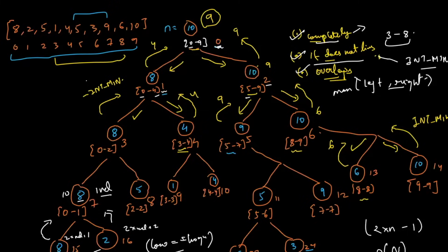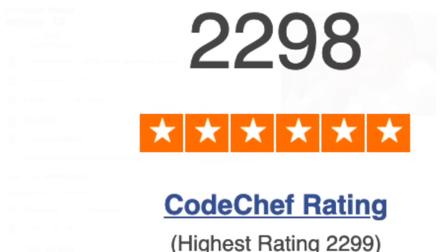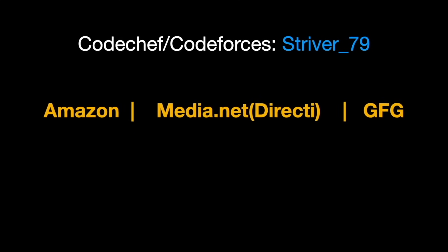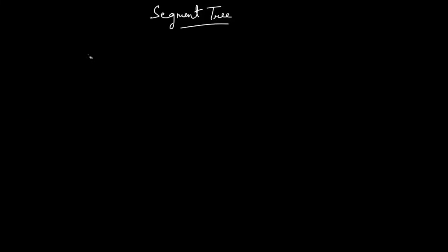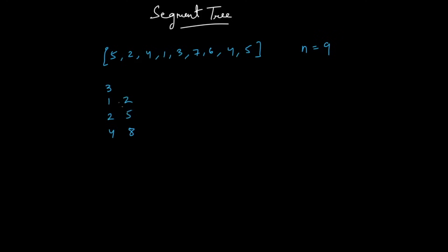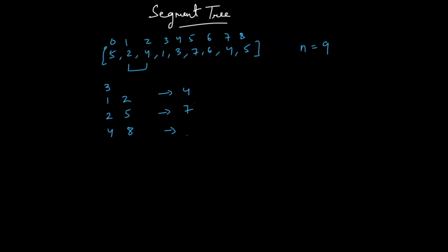So let's move on to today's video. Let's first understand the use case of segment trees. Assume you're given N integers and three queries. For every query, you are given two integers L and R, and your task is to print the maximum in the range L to R. For example, from index 1 to 2, the maximum is 4. For 2 to 5, the maximum is 7. For 4 to 8, the maximum is again 7.